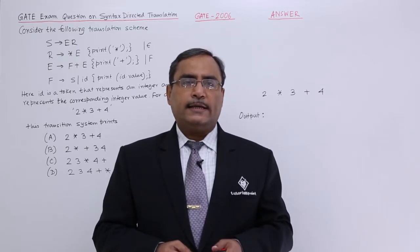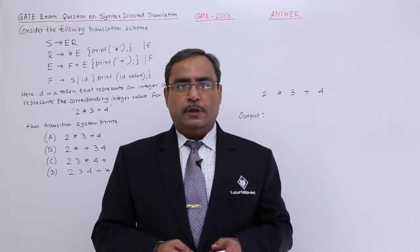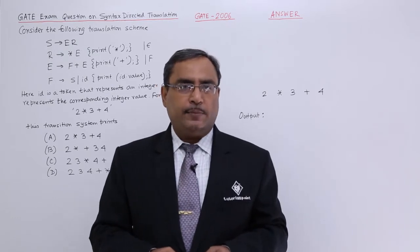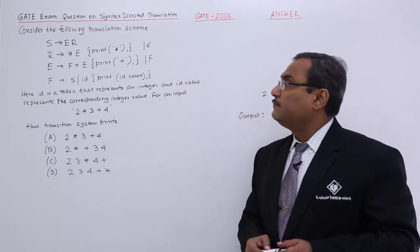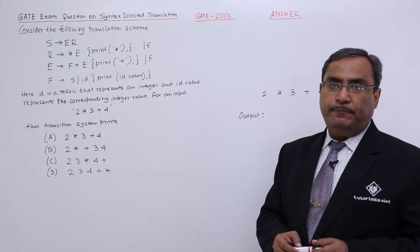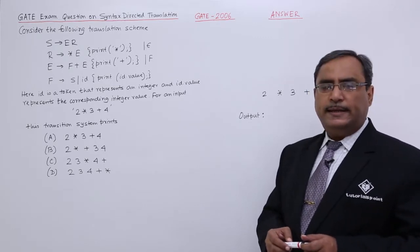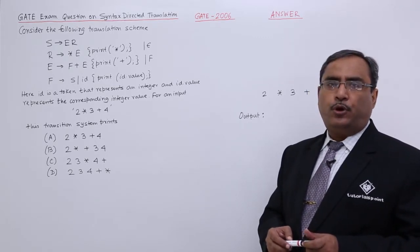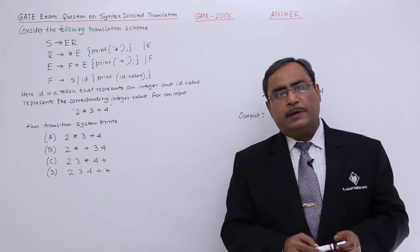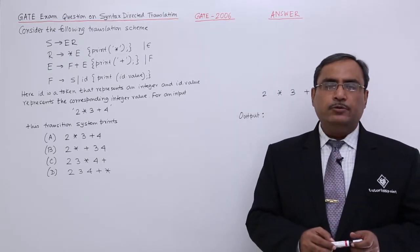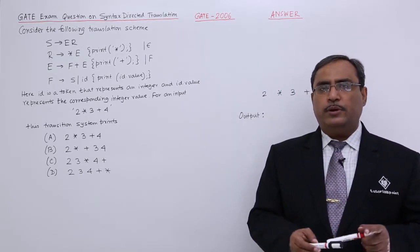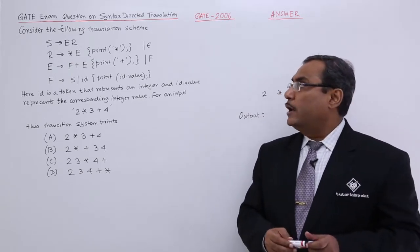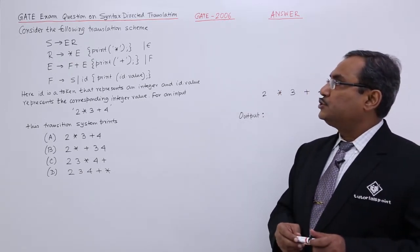Solving another problem on syntax directed translation. This question came in the GATE exam also. Consider the following translation scheme. We know that in case of syntax directed translation, along with the production rules, we will be having our semantic actions and we usually write those semantic actions within curly braces.